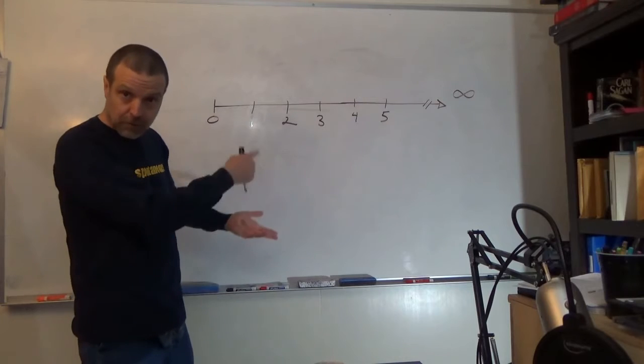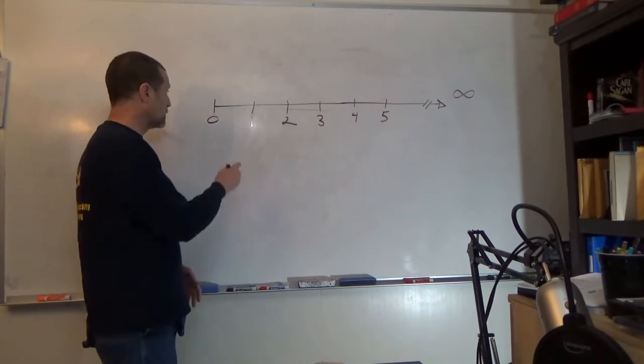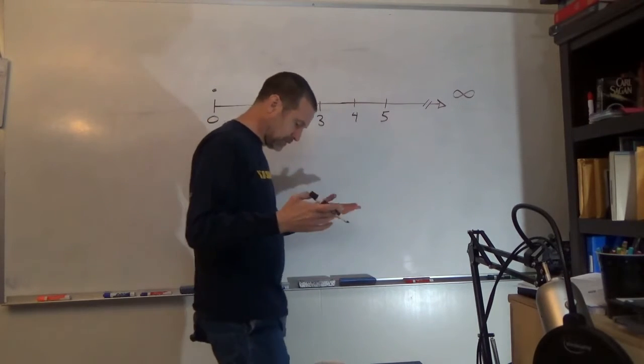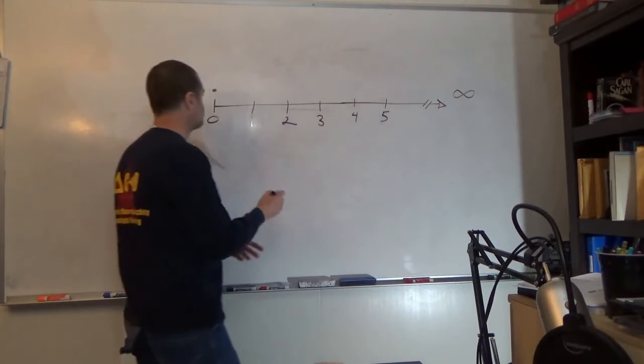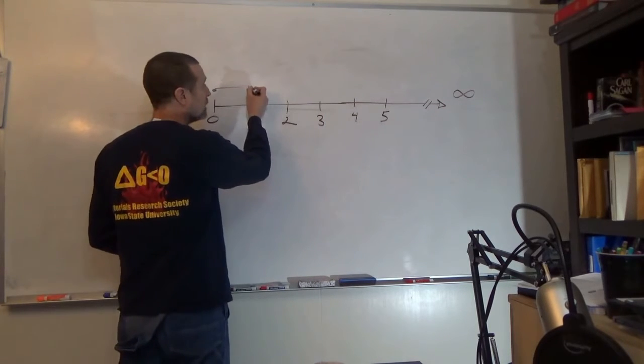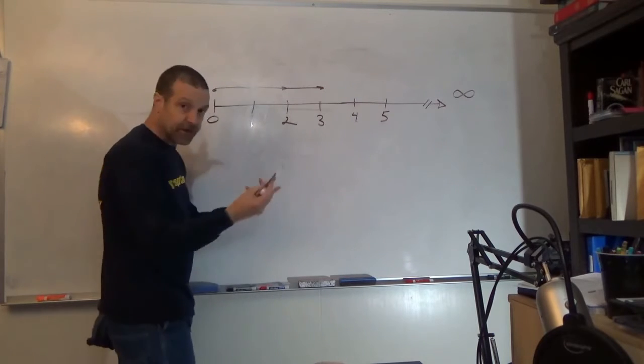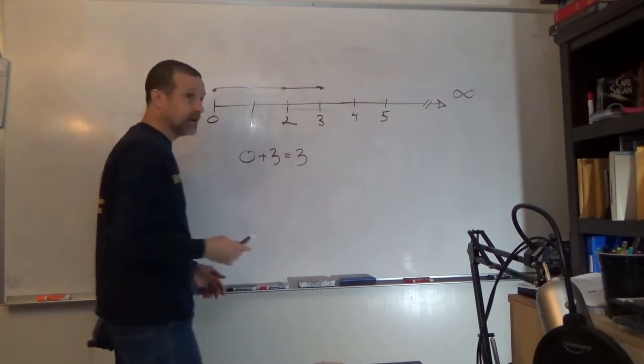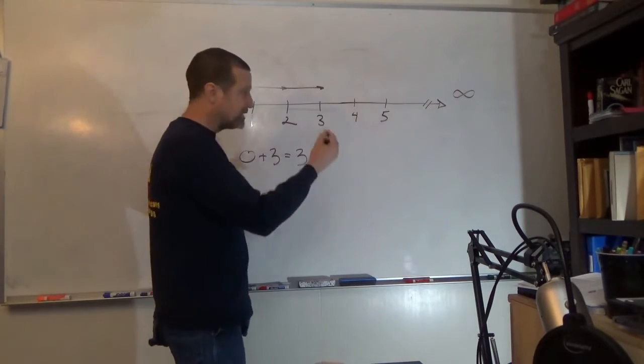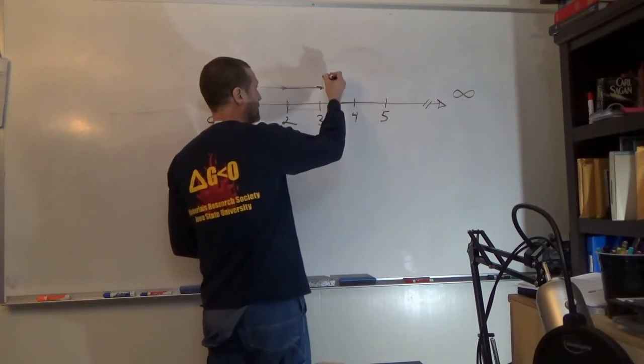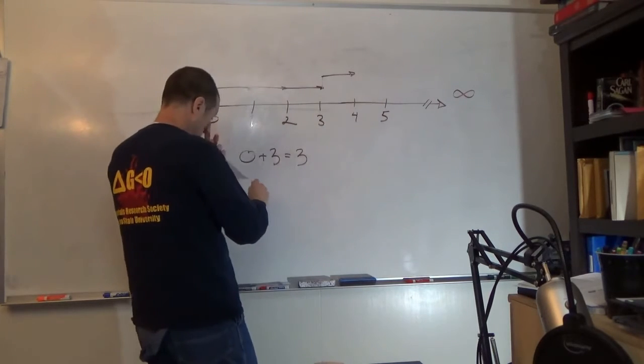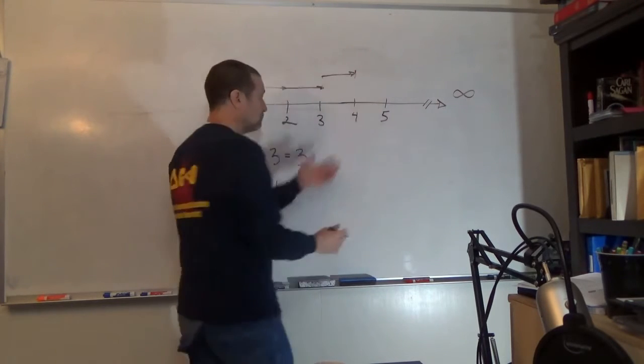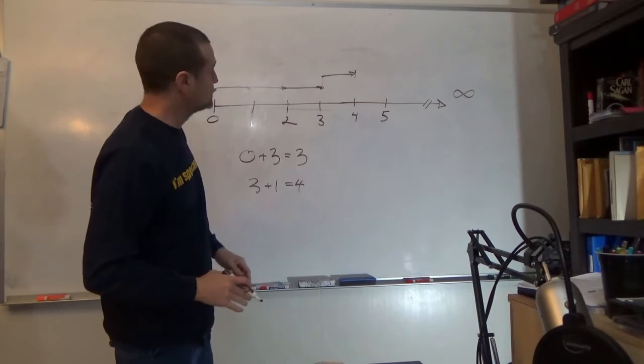So number lines are really good for learning things like addition, right? If I start at 0 and say, I'm going to take 3 steps forward, 1, 2, 3. Well, what I just did is I went 1, 2, 3. The operation is 0 plus 3 is equal to 3. And you can take another step forward. I could say, I'm going to go one more step forward, 3 plus 1 is equal to 4. This is stuff that you probably understand already.